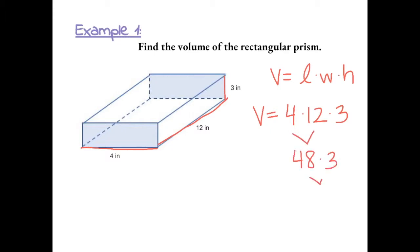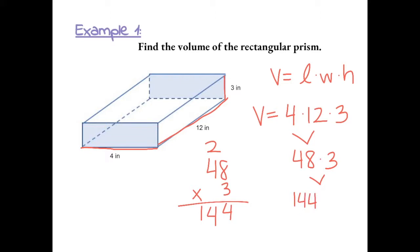Now we have to do 48 times 3. 8 times 3 gives us 24, and 3 times 4 gives us 12. Plus two more is 144. So the volume of this rectangular prism is 144 inches cubed.